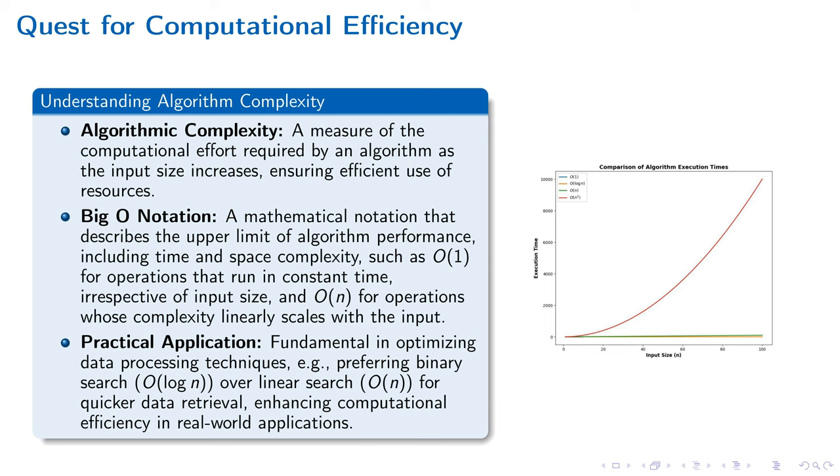In our exploration of computational efficiency, we turn our attention to the significant role played by algorithm complexity. Picture accessing an element in an array, illustrating constant time complexity, or O(1), where time taken is independent of the array's size. Contrastingly, consider searching in an unsorted array, which falls under linear time complexity, O(n), where the task's duration increases with the input's size.